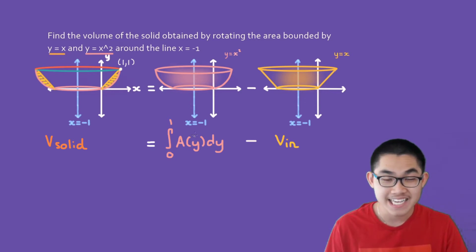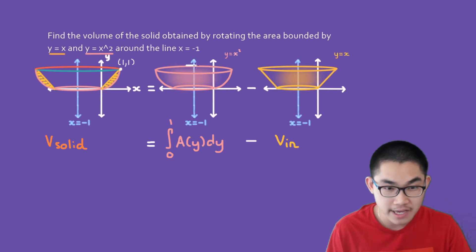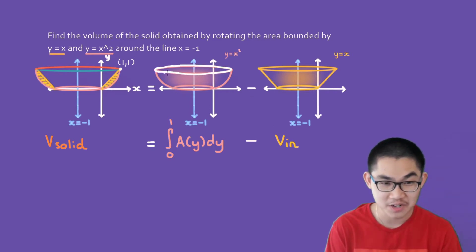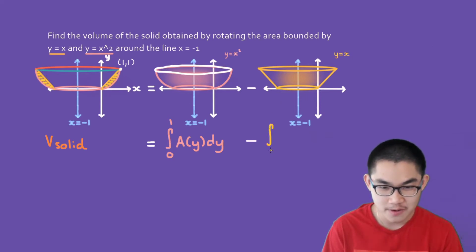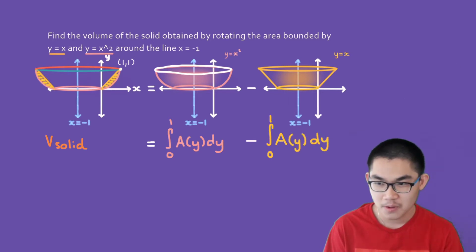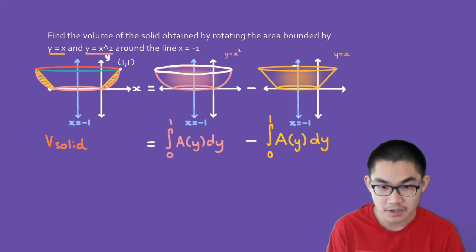Where A(y) is the area of the cross-section — and choosing a cross-section right here, that cross-section is a circle. The volume of the inner function is also the integral from 0 to 1 of A(y) dy, where A(y) is the area of that cross-section, which is also a circle.